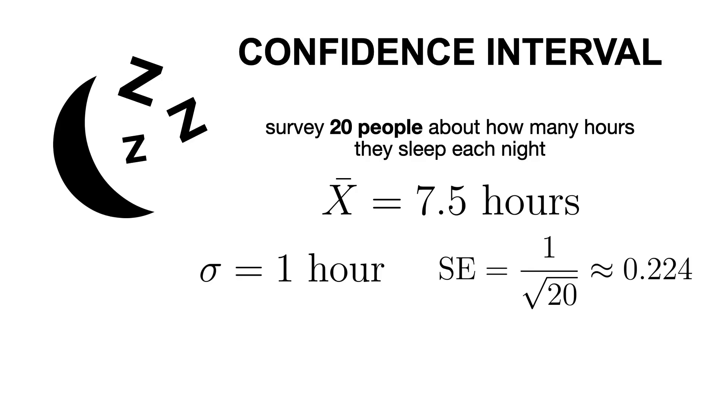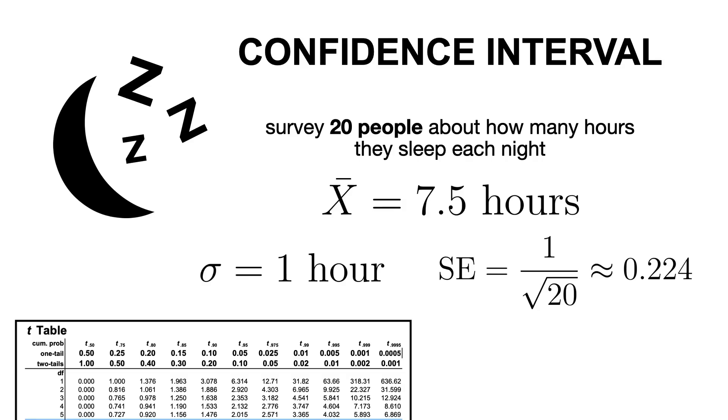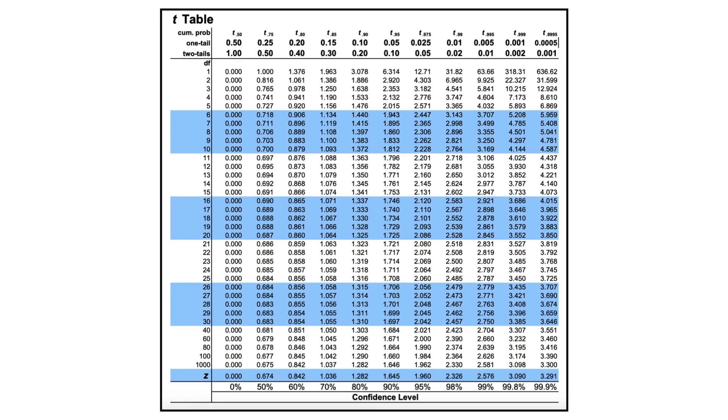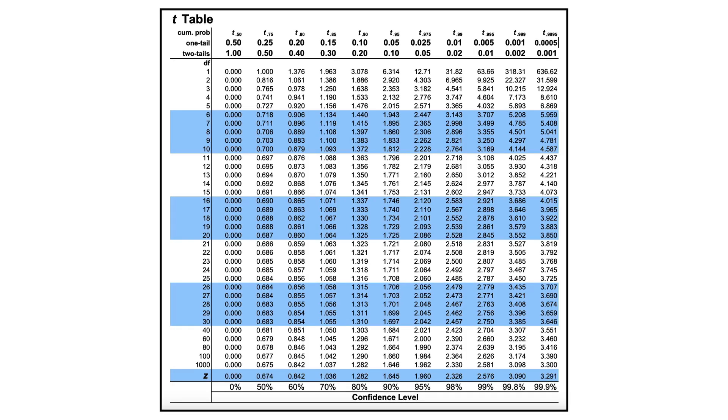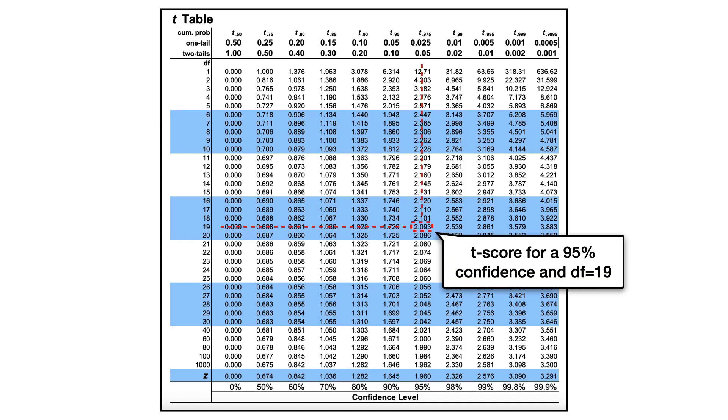Now, we need to find the critical value. For a 95% confidence interval, we look into the t-table for the two-tail distribution. And yes, usually when computing the critical values for confidence intervals, we use two-tail statistics, because the confidence interval is designed to capture the true population parameter within a range that accounts for uncertainty in both directions. And if we do that for a df equals to 20 minus 1, which is equal to 19, we get a critical value that is equal to 2.093.